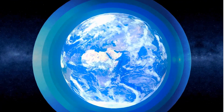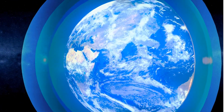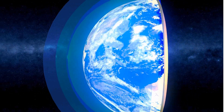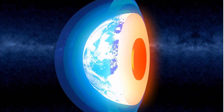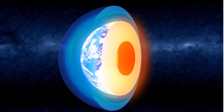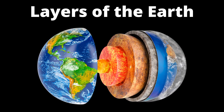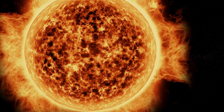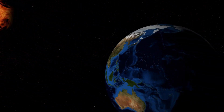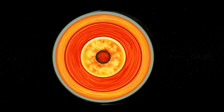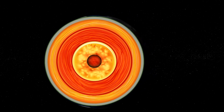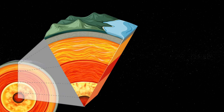Our Earth is an amazing place to live, but to really understand the Earth, you need to travel 6,400 kilometers beneath our feet. Hello friends, welcome to TopRangeGK. The Earth is composed of multiple layers that vary in composition, temperature and physical properties. These layers are crucial to understanding the structure and dynamics of our planet.